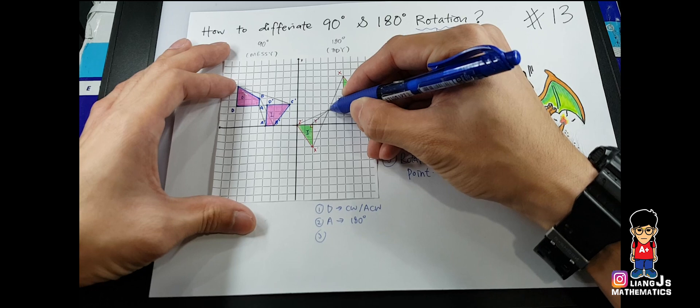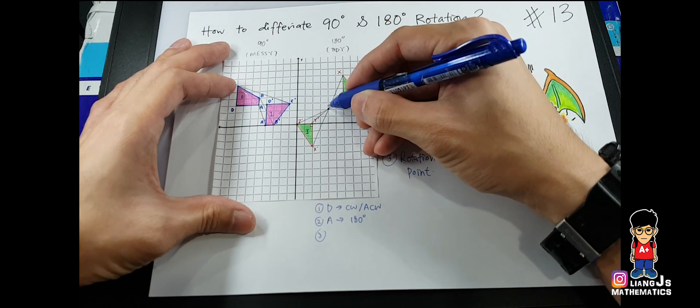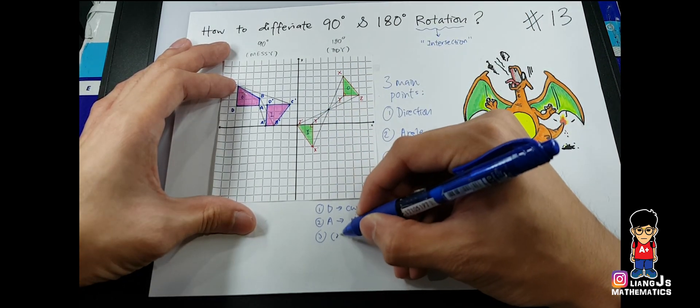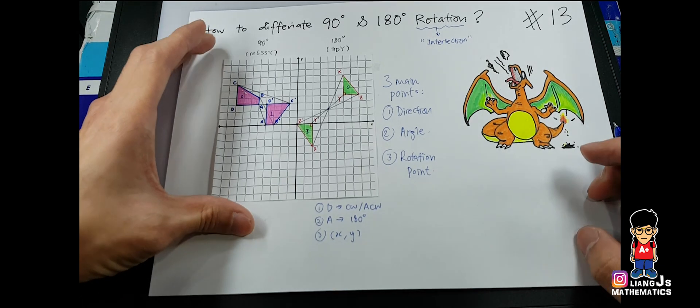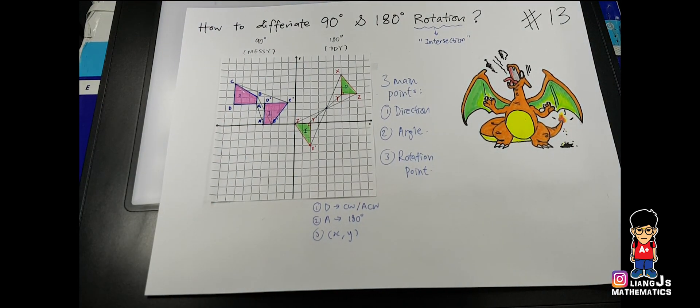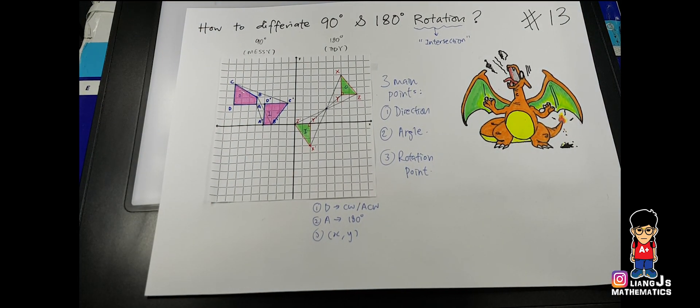And number three, do you notice there is only one particular rotation point? And that will be a certain coordinate where you have to fill it up yourself using XY. 180 degree is the easiest one. So now, let's come into the hard one, which is 90 degree.